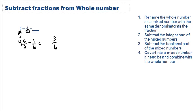Number 4 says convert to a mixed number if need be and combine with the whole number. We decided that 4 was just going to carry over because we didn't have any integer right here to subtract from it. So our answer of 5 minus 1/6 is equal to 4 and 5/6.